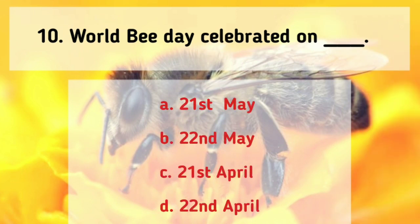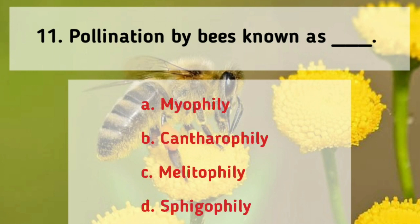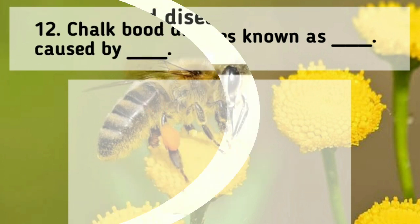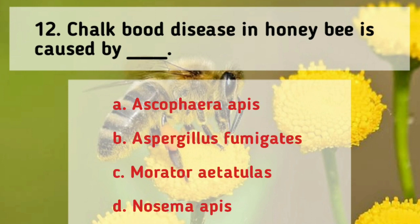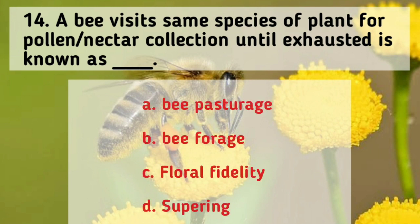World Bee Day is celebrated on 22nd May. Pollination by bees is known as melitophily. Chalk brood disease in honey bee is caused by Ascosphaera apis. Royal jelly is produced by worker bees.